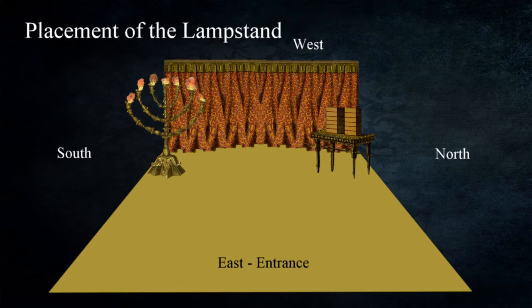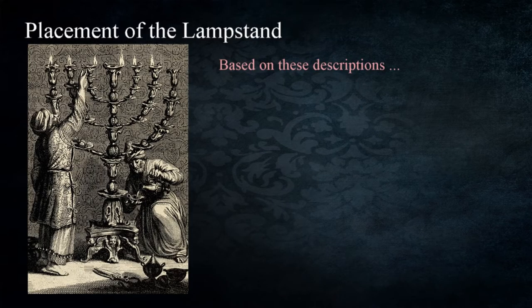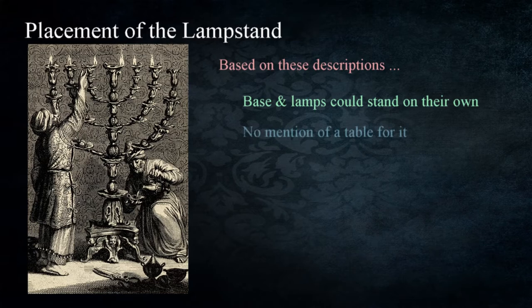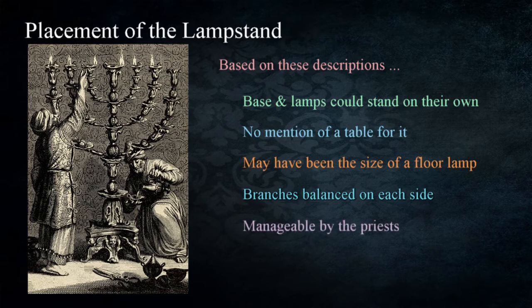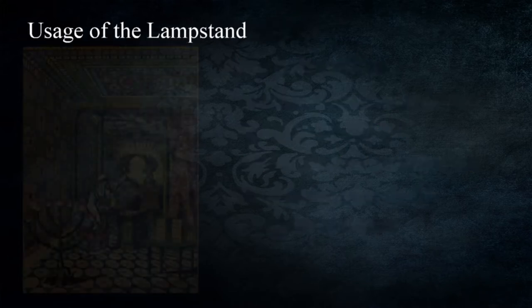It seems logical to think that the lampstand was tall enough and the lamps large enough to stand on their own — there's no mention of placing it on another table, nor any indication a table was created for it. The lampstand may have been the height and size of what we see today in a floor lamp. The branches would have been equally spaced providing balance on each side of the column where the central lamp rested. Its height would also be manageable by the priest who would need to use snuffers and other equipment to trim the flame and add oil.